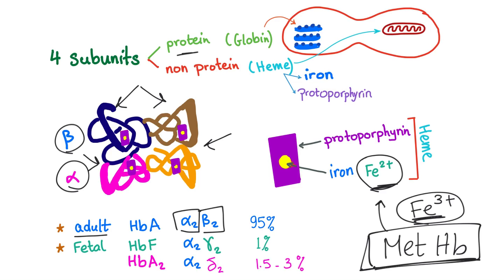Also, we have something called hemoglobin A2, α2δ2. And it forms 1.5 to 3% of the adult hemoglobin. So this is the adult percentage. Fetal will have, most of them, fetal hemoglobin. But for adult, 95% A, 1% F, 1.5 to 3% A2.